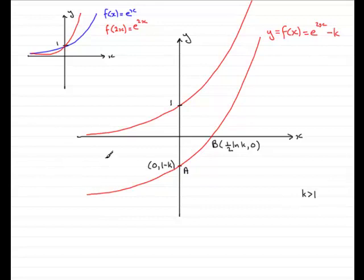But the most important line here is the x axis, because e to the 2x, this graph here, tends towards the x axis.